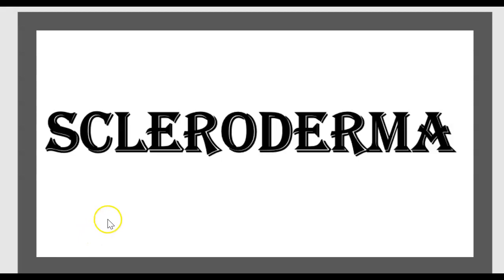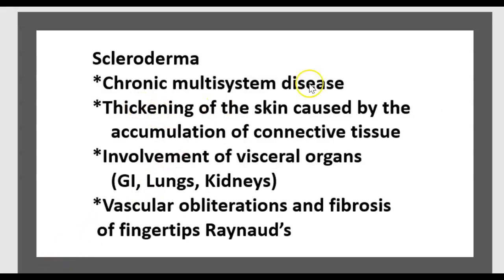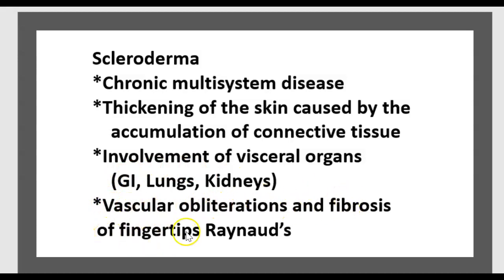We start with scleroderma. It's a chronic multisystem disease. It's a thickening of the skin caused by the accumulation of connective tissue, with involvement of several organs like the GI tract, lungs, and kidneys, and vascular obliteration and fibrosis of the fingers' tips — Raynaud.